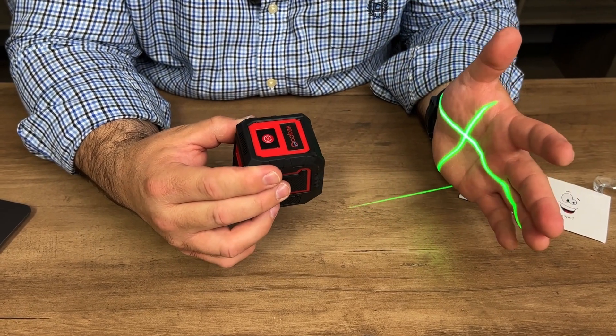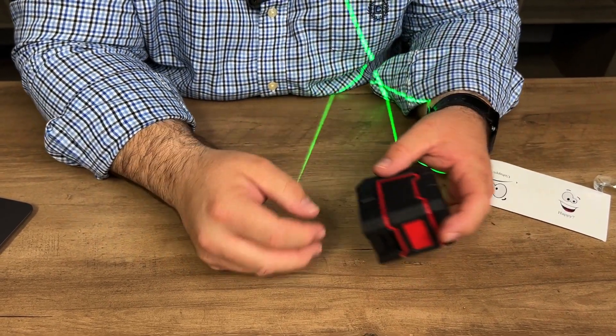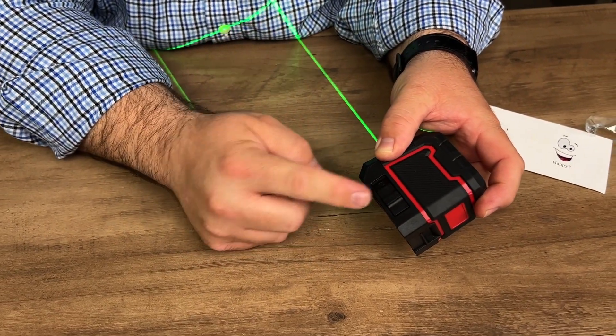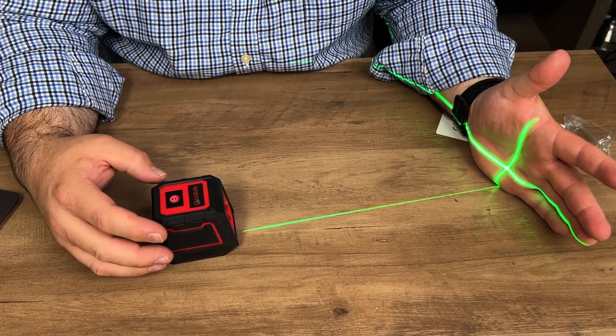As you can see right now, this is moving as I turn the laser level itself. And there is a mode here. You can switch this on the bottom. Now with it like this, you can see it kind of self-leveling.